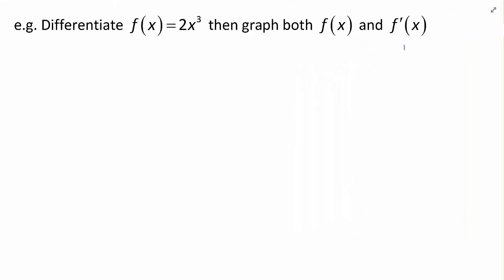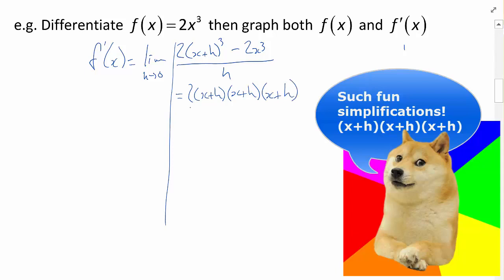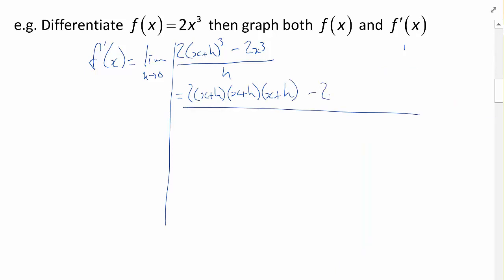Example: Differentiate and then graph both f of x and f prime of x. So f prime of x is equal to the limit as h approaches 0 of 2 times x plus h cubed minus 2x cubed all over h. And let's just work on simplifying this limit here. I could do x plus h times x plus h times x plus h, but that would be a real waste of my time.